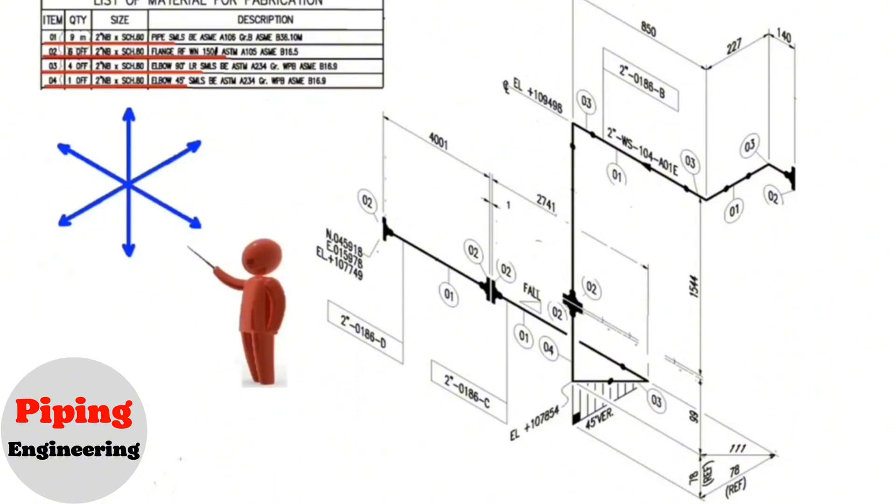A person who wants to read a drawing should imagine himself at the intersection of these directions. Then that person's face will look to the north. His back will look to the south. His right hand will look to the east, and his left hand will look to the west. His head will be up and his feet will be down.